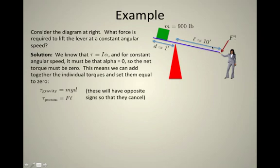The sum of these two torques have to cancel out because the sum of the torques has to equal zero. So the sum of the vector torques, which are in opposite directions, equals I times alpha equals zero.